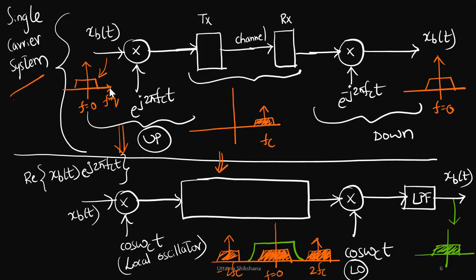In case of single carrier system, I will mainly focus on upconversion and downconversion. Let's say xb(t) is the time domain baseband signal having the frequency response as shown here, whose frequency response is centered around DC. If I multiply with an exponential component, this is equivalent to performing the upconversion and the spectrum would be shifted to center frequency fc. This is as per the basic properties of Fourier transform.